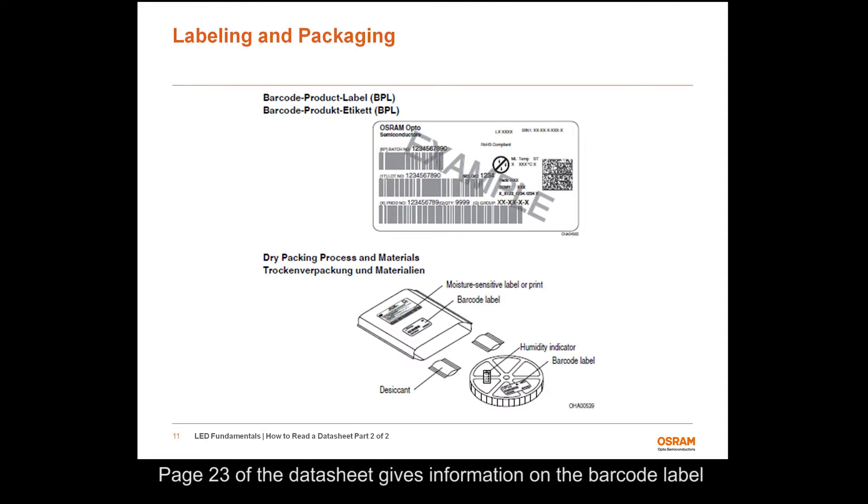Page 23 of the datasheet gives information on the barcode label and the packaging details. A standard barcode product label identifies the contents by producer, country of origin, product designation, lot number, date code, material number, and quantity.